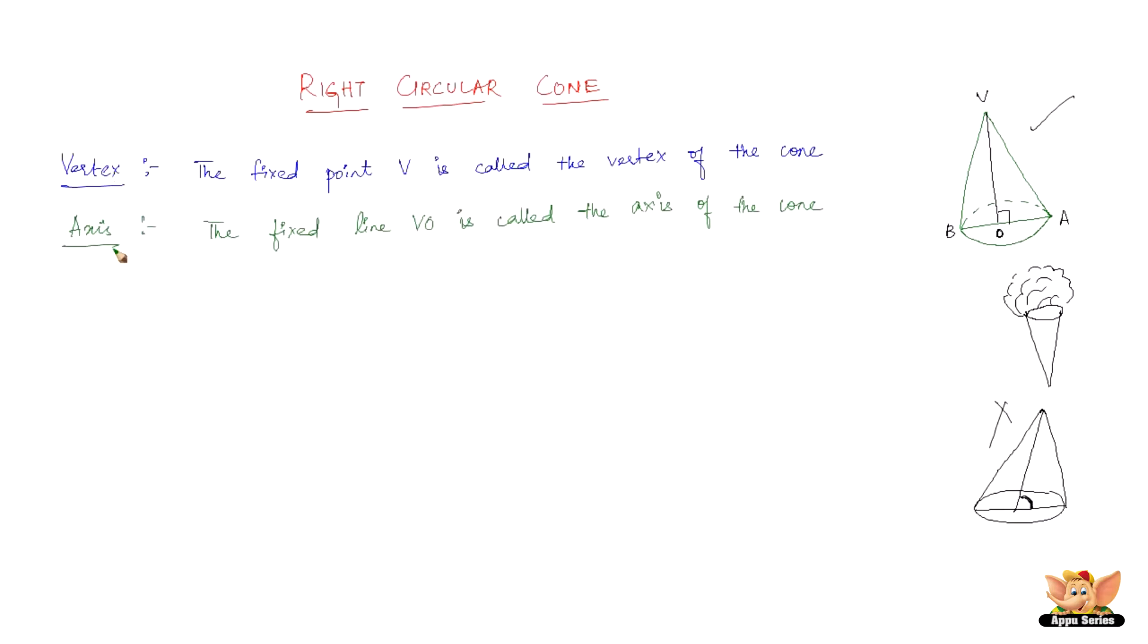The second point is axis. The fixed line VO, this line here VO, is called the axis of the cone.